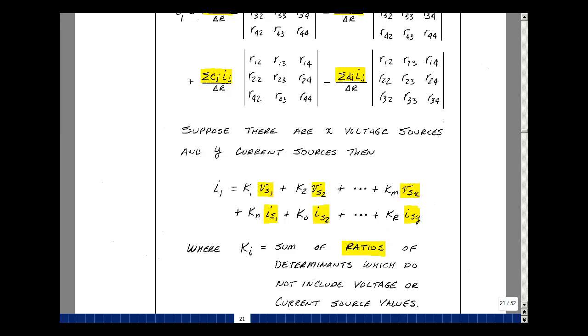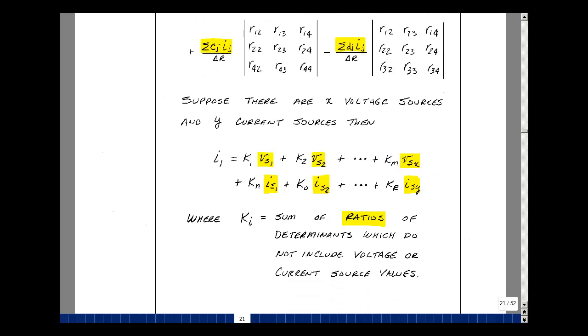Total response, in this case we're doing I1, can be found by calculating the response due to one source at a time with all the other sources set equal to 0 and adding up the results. And that's the principle of superposition.